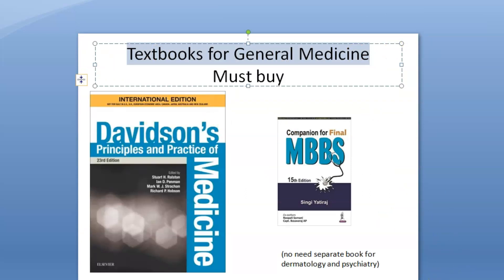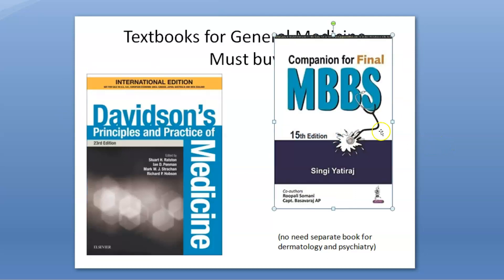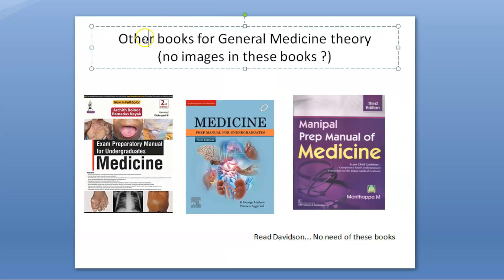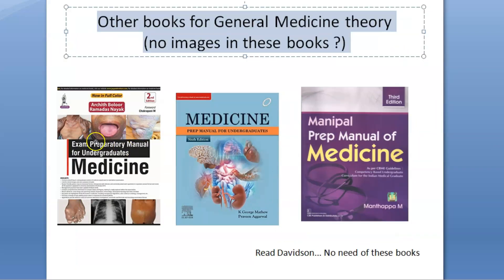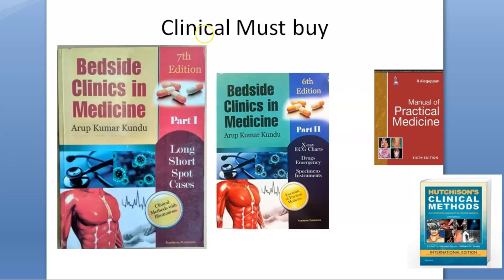For textbooks, the recommended book is Davidson's, because it is written in simple language with diagrams and is very exam-oriented. Along with it, you can buy a companion which is a question bank showing top priority questions from each chapter. Students also use exam preparatory manuals, but I don't recommend those because Davidson's is more than sufficient - though it is a heavy book, so check prep manuals from the library to decide.